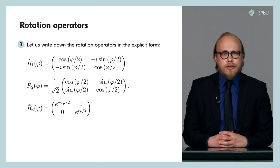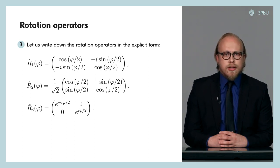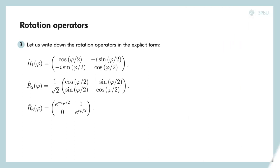On the last slide, the rotation operators are written in their explicit form. Note that in the case when φ is equal to π, each of the rotational operators will be equal to the corresponding Pauli matrix. Thus, Pauli matrices can be considered as a rotation operator for an angle π around the corresponding axis: σ₁ around the x-axis, σ₂ around the y-axis and σ₃ around the z-axis. That's all. Now we have everything to talk about quantum logic gates in the next lesson. Thank you for your attention.